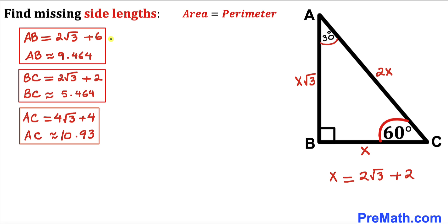And here are our final answers: AB side length, BC side length, and AC side length. Thanks for watching and please don't forget to subscribe to my channel for more exciting videos. Bye!